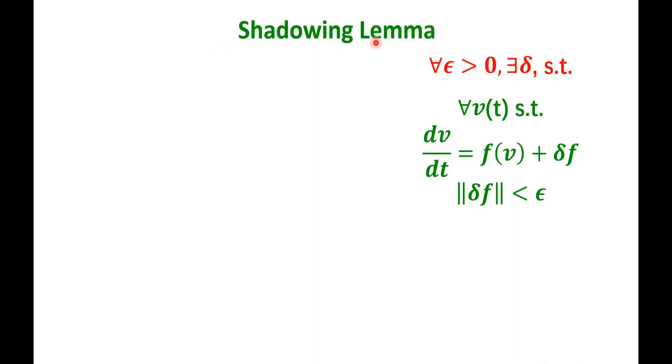The shadowing lemma is a rigorous mathematical statement that says that for any epsilon greater than zero, there exists a delta. That's the typical calculus kind of statement. If I have a solution v(t) that satisfies a perturbed version of a differential equation, so dv/dt equal to f(v) plus a perturbation term.